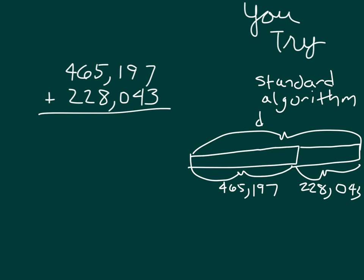Seven ones, three ones is ten ones, zero, regroup the one. Adding up those tens, I get fourteen tens, so I place a four and regroup the one.